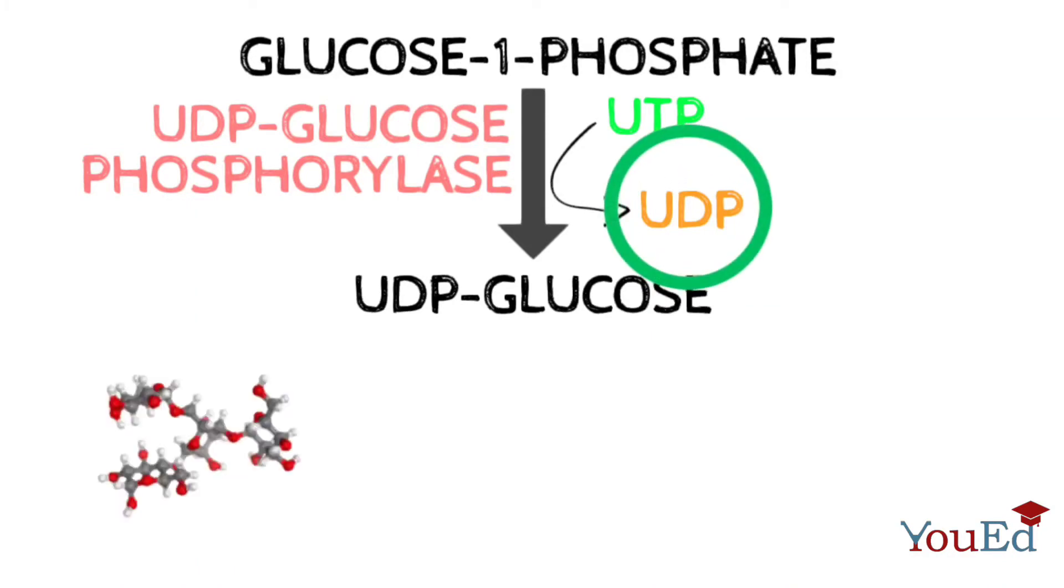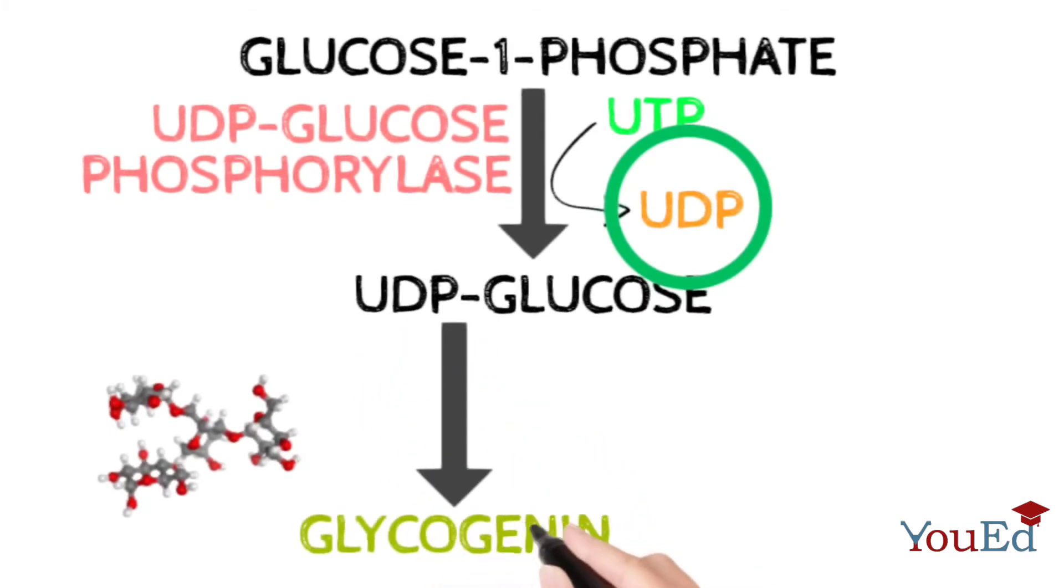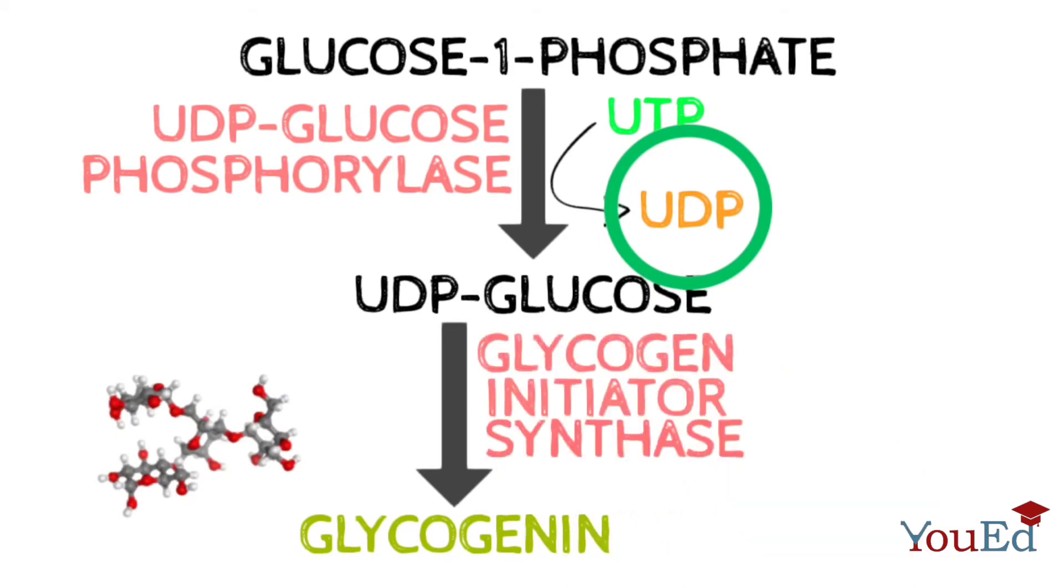Now a primer is required to start the glycogen synthesis, and usually a pre-existing small fragment of glycogen is used. But in the absence of glycogen fragment, a protein called glycogenin accepts the glucose from the UDP-glucose molecule. Thus glycogenin initiates synthase and transfers the first molecule of glucose to glycogenin, forming a primer.